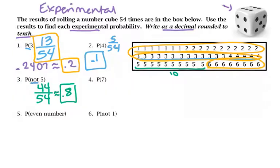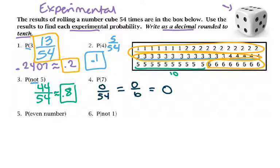For the probability of getting a 7: there are no 7s on a die, so both the theoretical and experimental probability are the same — zero. Theoretically it would be 0 out of 6, which equals 0. That's an impossible event. So 0 represents something that is impossible and can never happen. One side note: if you round a probability and it comes out to 0, go more decimal places, because you do not want to say the probability of something is 0 unless it is literally impossible.